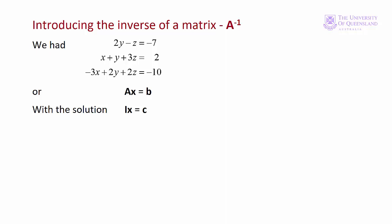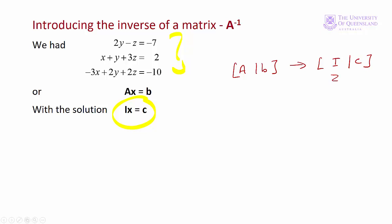Why are we interested in the inverse of matrices? Recall in Module 1 we solved a system of linear equations. Using Gaussian elimination we found a solution. We started with an augmented matrix of the form AB and transformed that into another augmented matrix IC, where the identity matrix was on the left and the solution to the equation on the right.